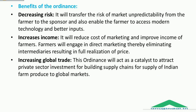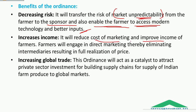The benefits of this ordinance include: transferring the risk of market unpredictability from the farmer to the sponsor, enabling the farmer to access modern technology and better inputs, reducing costs of marketing, and improving farmer income. Farmers will engage in direct marketing thereby eliminating intermediaries — dealing directly with processors, exporters, etc. This ordinance will also act as a catalyst to attract private sector investment for building supply chains to supply Indian farm produce to global markets.